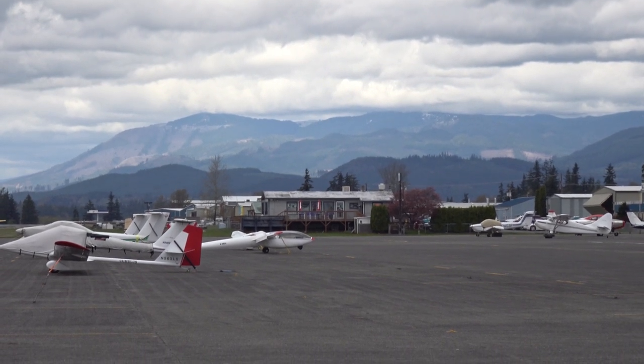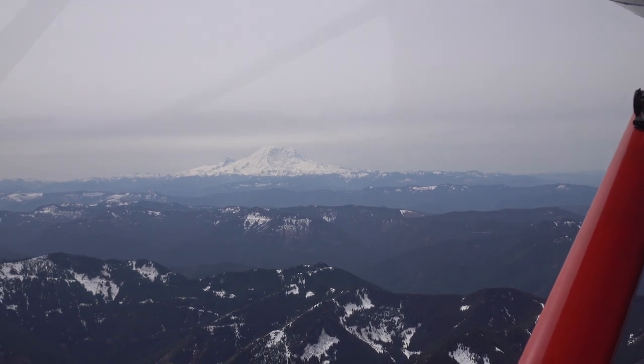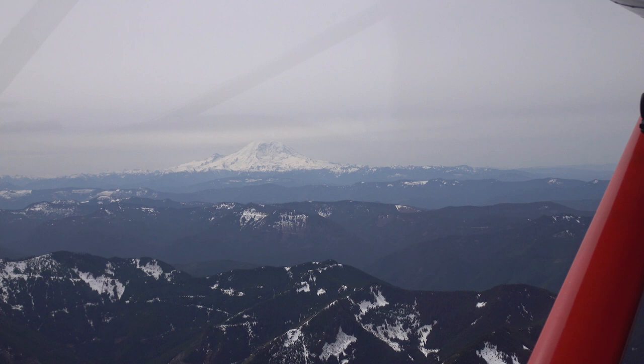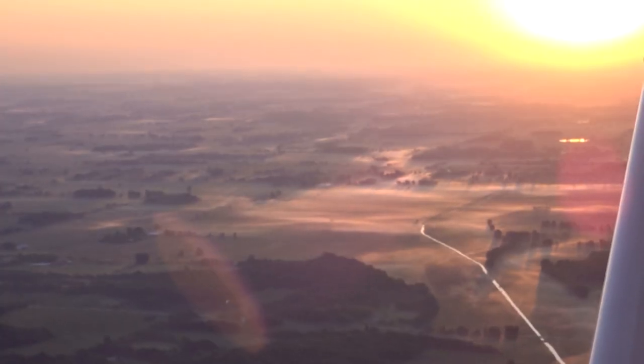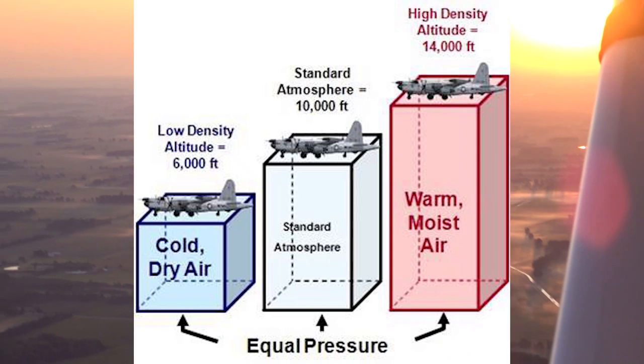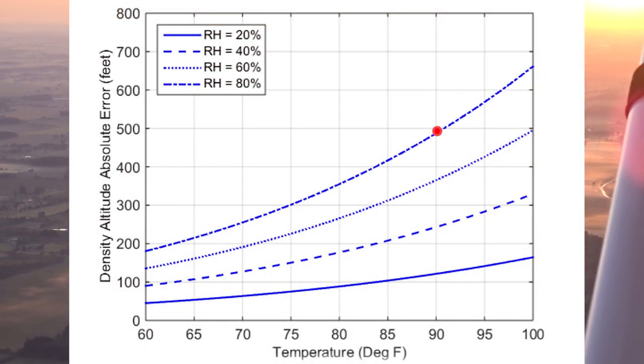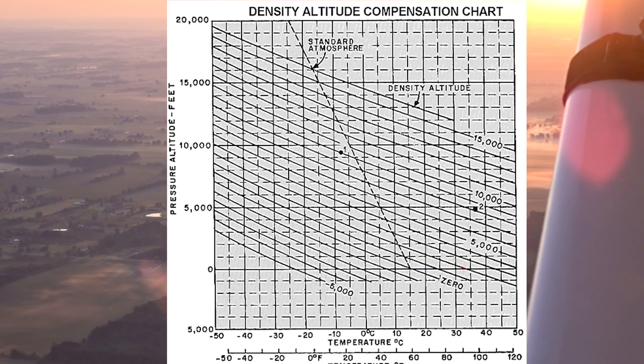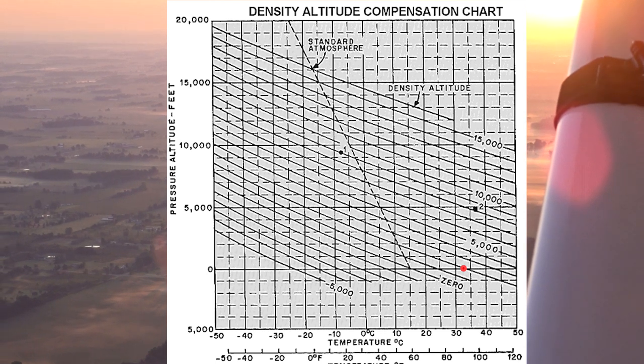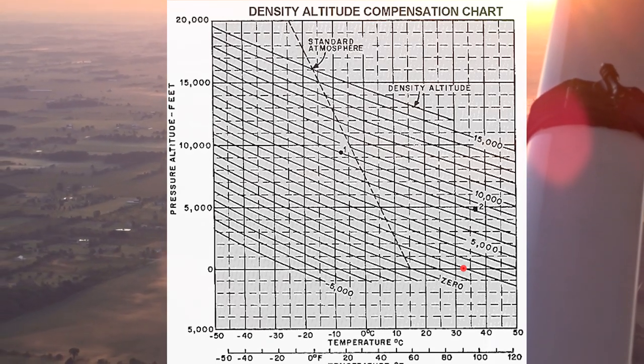We also need to think about altitude. High altitude decreases takeoff performance, and density altitude has the same effect. High temperatures increase density altitude, and high altitudes increase density altitude. What people don't think about is humidity — humidity also increases density altitude. At 90 degrees with 90-plus percent humidity at sea level, you'll have a density altitude of about 2,500 feet. Dry that air out to low humidity and it's about 2,000 feet. A lot of people don't think about humidity when calculating density altitude.